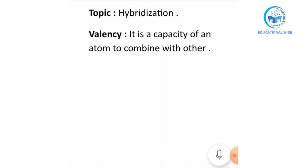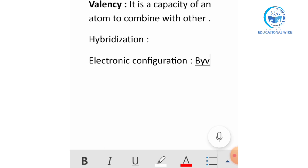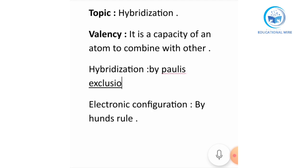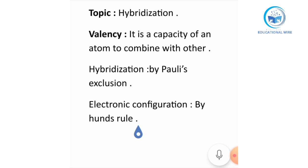There are two types: one is hybridization and the second is electronic configuration. Talking about electronic configuration, it is discussed by Hund's rule. And hybridization is discussed by Pauli's exclusion rule. These two rules are followed in electronic configuration.